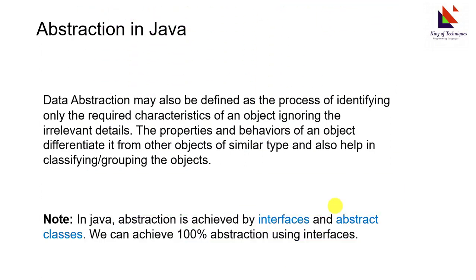What is abstraction? Data abstraction may also be defined as a process of identifying only the required characteristics of an object, ignoring the irrelevant details. The properties and behaviors of an object differentiate it from other objects of similar type and also help in classifying and grouping the objects.